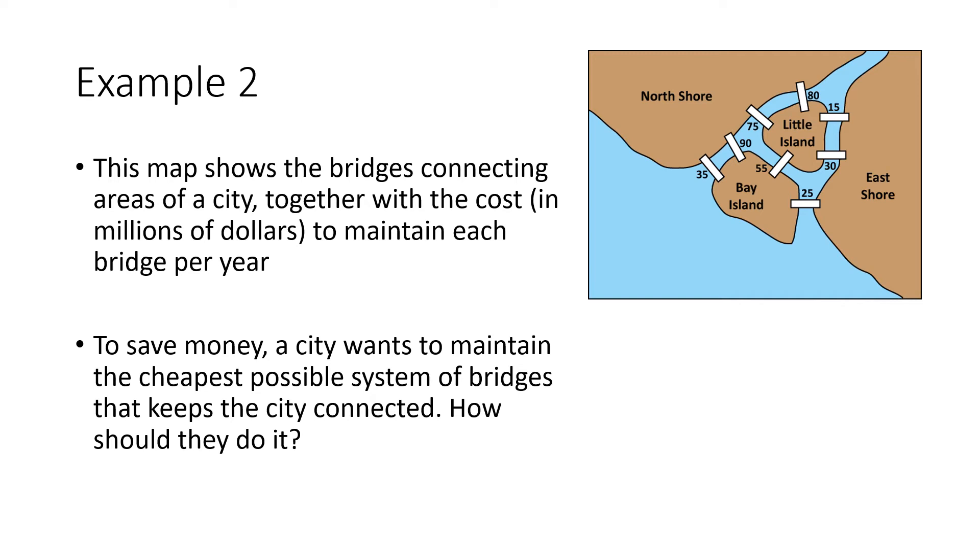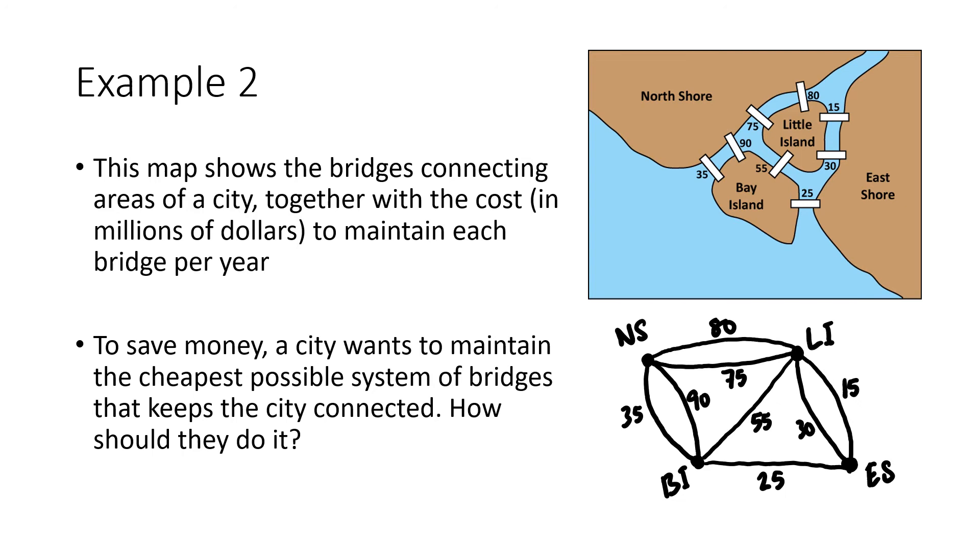Here's another example, a bit different but same idea. We've got a map with bridges going between different parts of the city. The numbers represent the cost of maintaining those bridges, so to shut down some bridges and keep it cheap, we use the lowest numbers. We create a graph where each of the four land masses is a vertex and each bridge is an edge. Now we'll use Kruskal's algorithm.